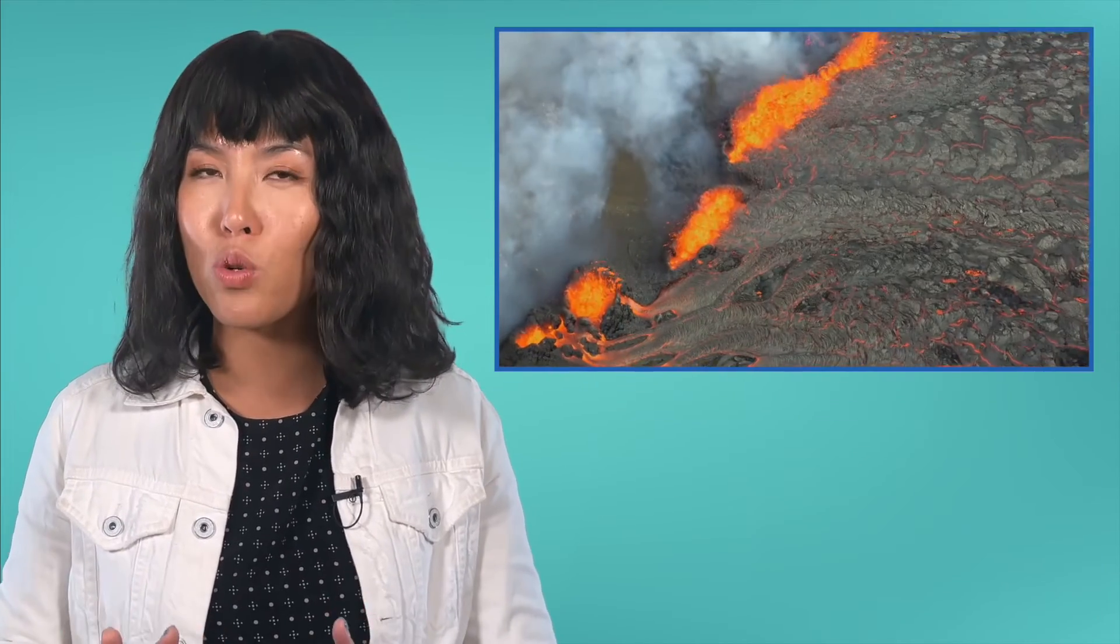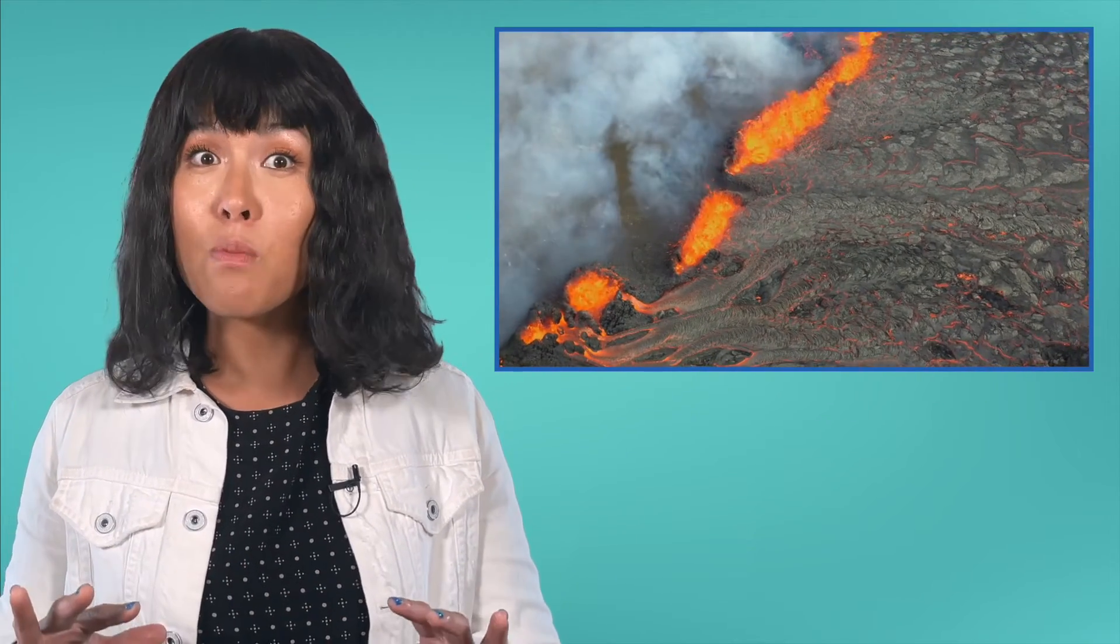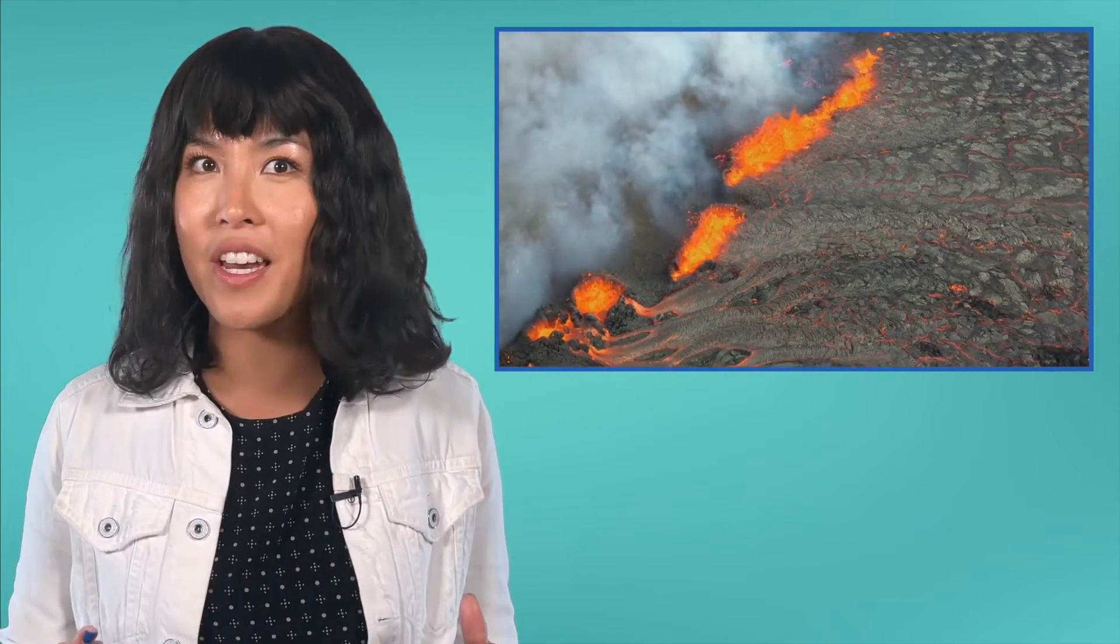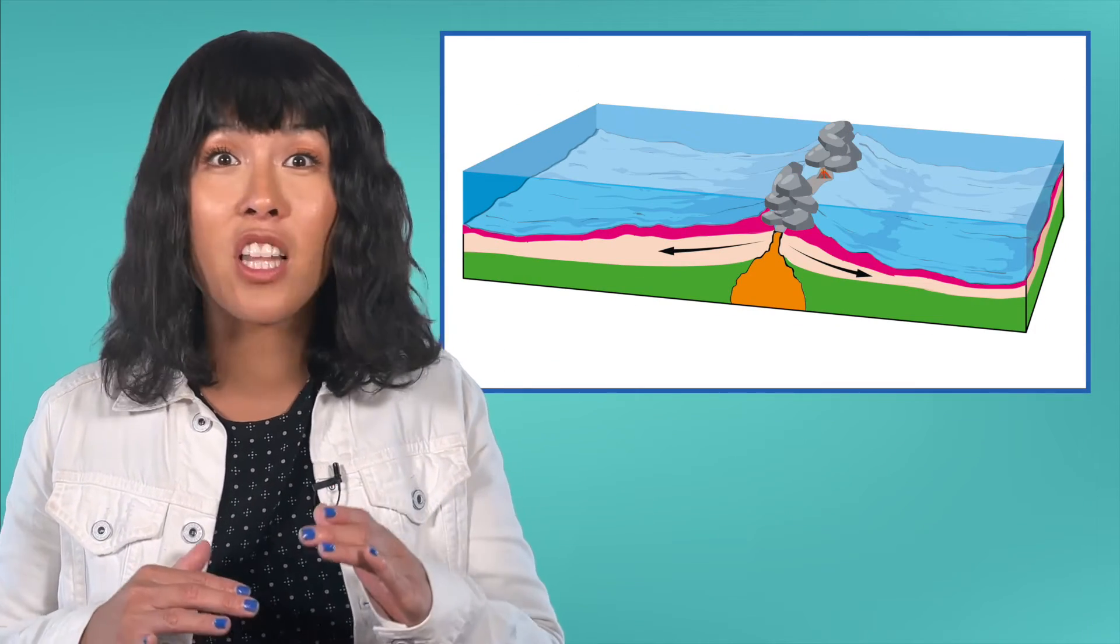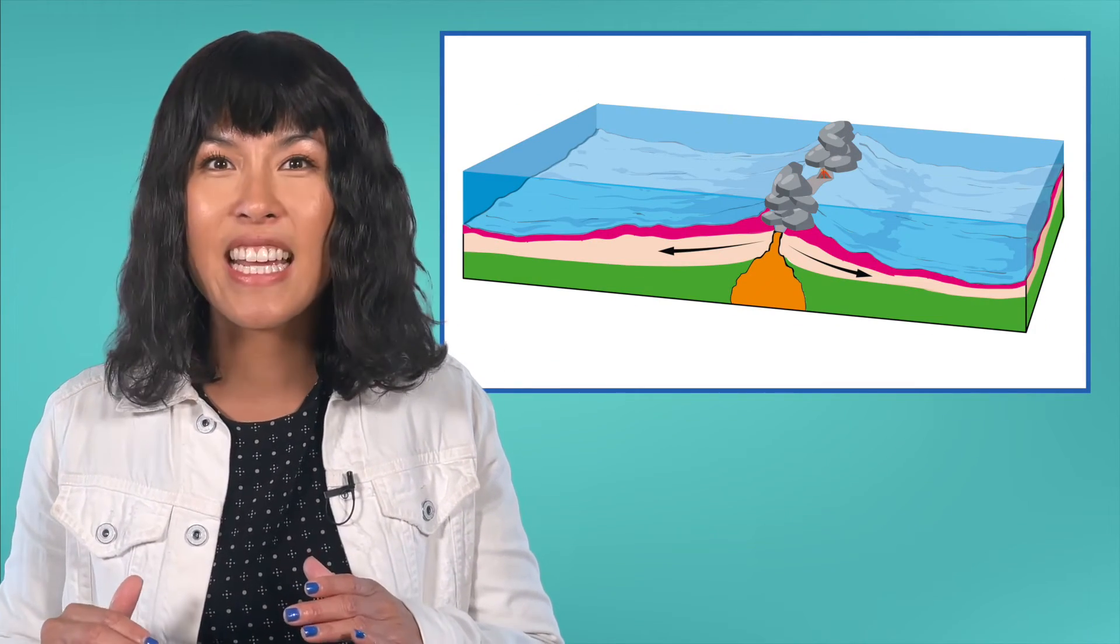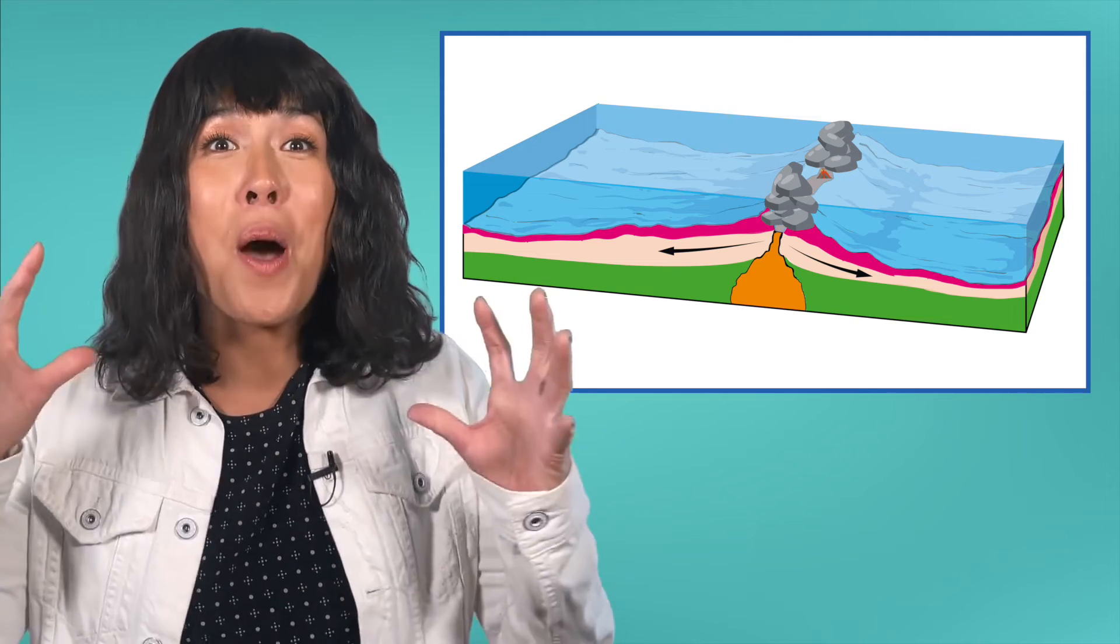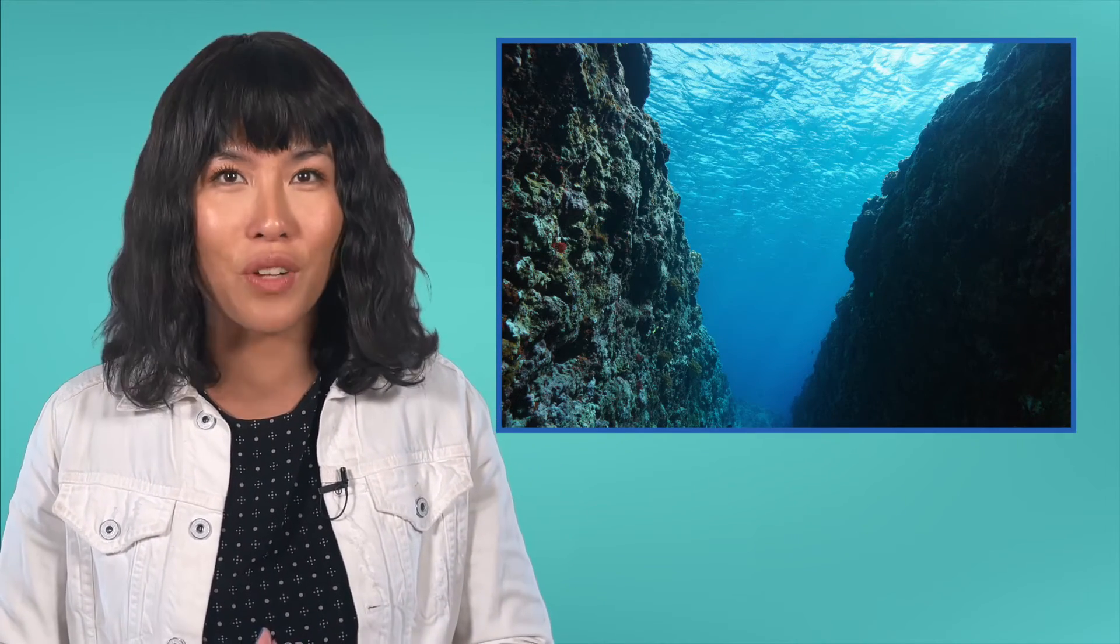As this magma cools and hardens, it does more than just create new oceanic plates, though. These new rocks tend to really pile up along the edges of the plates, creating entire undersea mountain ranges known as mid-ocean ridges.